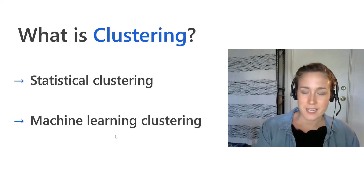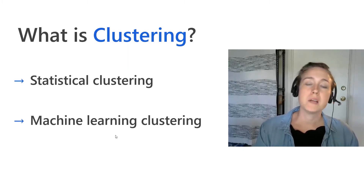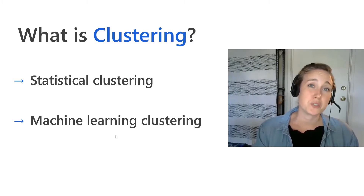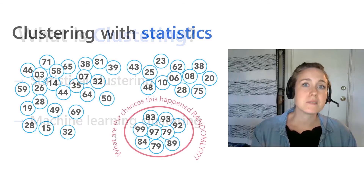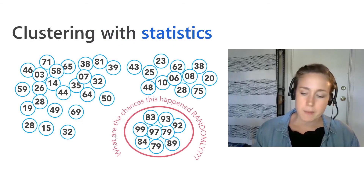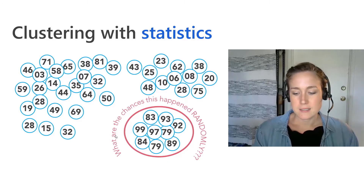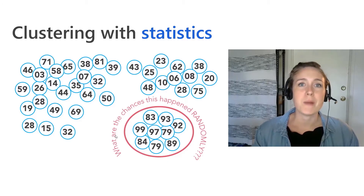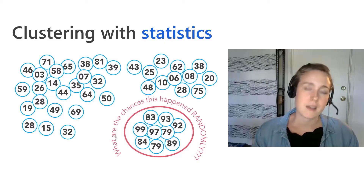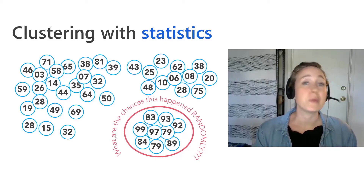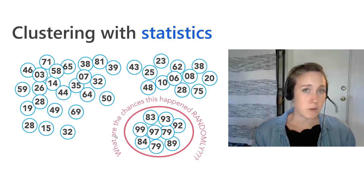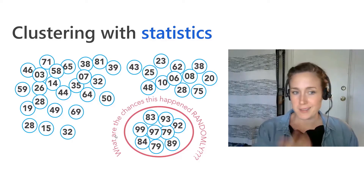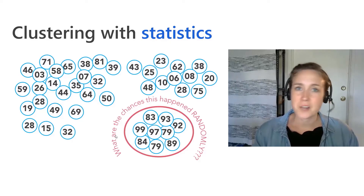Understanding both areas helps equip you with the necessary information to figure out what's the best tool to solve your problem. Just because a method uses machine learning doesn't mean it's the best method. It's really about taking a step back and thinking about what question you're really asking, and figuring out which tool best answers that question. In statistical clustering, at the heart is a null hypothesis — often the concept of complete spatial randomness.